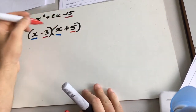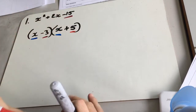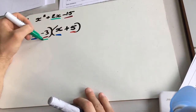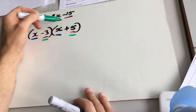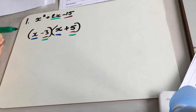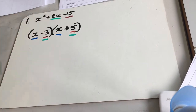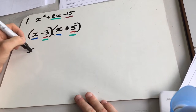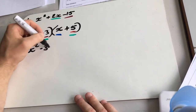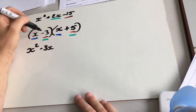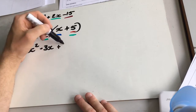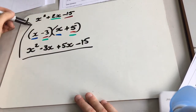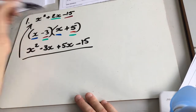Remember, the two numbers need to multiply to give 15 and add to give minus 2. So 5 plus minus 3 does give us plus 2 — just do that quick check. You should get in the habit of trying to expand these afterwards. Quick expansion: x times x is x squared, minus 3x, plus 5x, minus 15. Check that 5 take 3 gives us 2. Correct.